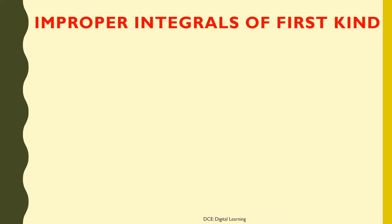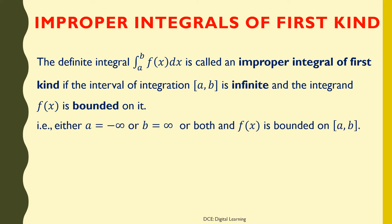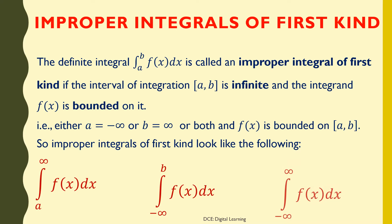Improper Integrals of First Kind. The definite integral of f dx from a to b is called an improper integral of first kind if the interval of integration [a,b] is infinite and the integrand f is bounded on it. That is, either a equals minus infinity, or b equals infinity, or both, and f is bounded on [a,b]. So improper integrals of first kind look like: integral of f dx from a to infinity, or from minus infinity to b, or from minus infinity to infinity.